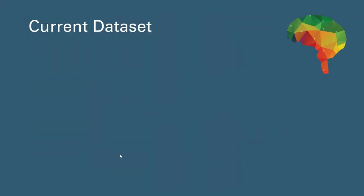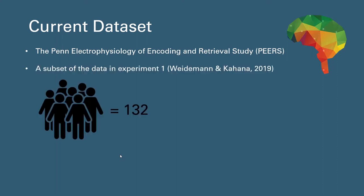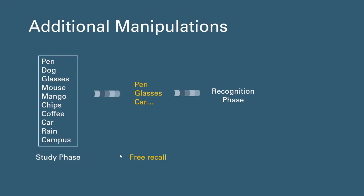Thanks to the generous data sharing by the Computational Memory Lab at the University of Pennsylvania, we're using a subset of peer datasets that include 132 participants with more than 6,000 trials with EEG recordings for each participant. In addition to the standard recognition memory paradigm, the study also included an immediate free recall session after studying each list where participants recall whatever they remember from the list. We see this as an opportunity for participants to strengthen the memory of the recalled items such as pen, glasses, and car.